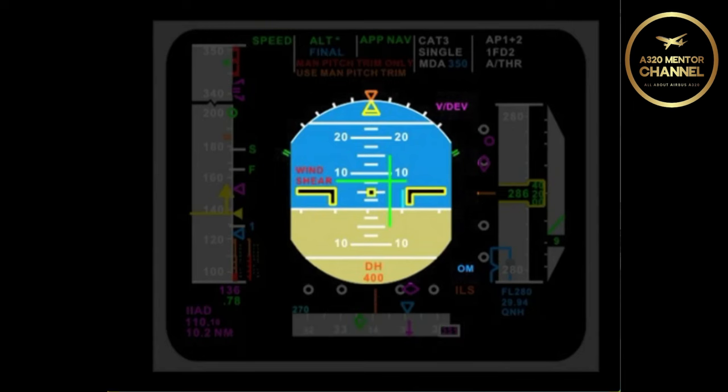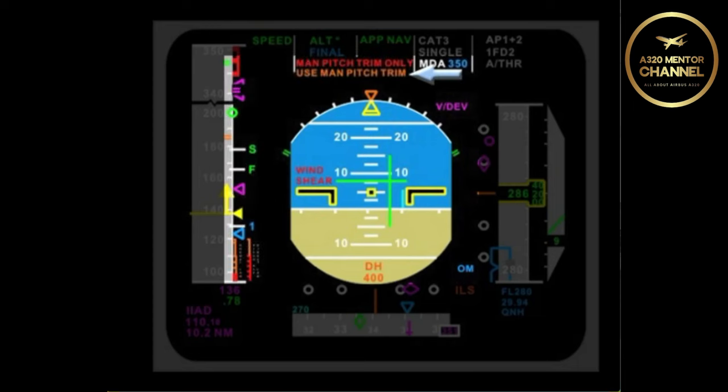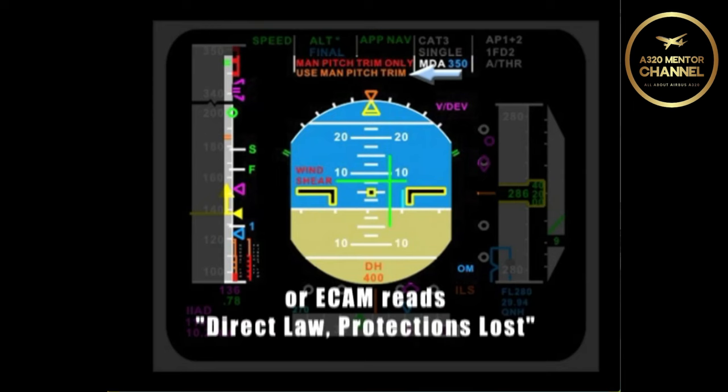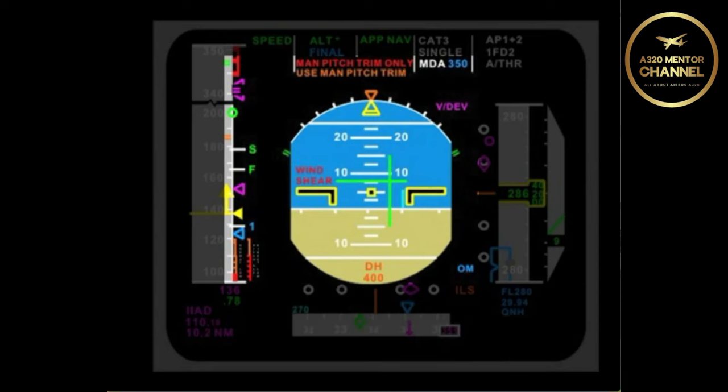Is there some visual indications which indicate that you are in direct law? Well, the easiest way is to read the amber PFD message indicating use man pitch trim. Or, you can look down at ECAM and it will read direct law protections lost. Are there any protections available under direct law? No, there are no protections.